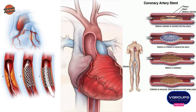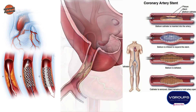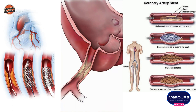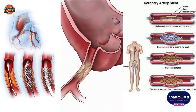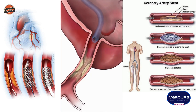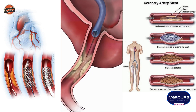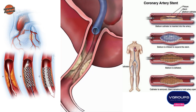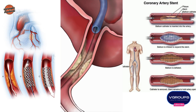Dye is given through the catheter and the x-ray camera is used to watch it flow through your heart. If the cardiologist identifies an artery to be treated with an angioplasty procedure, the catheter is guided to the blockage. A guide wire is placed through the catheter to the site.